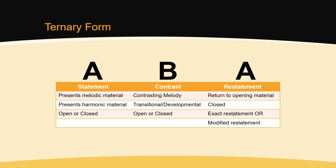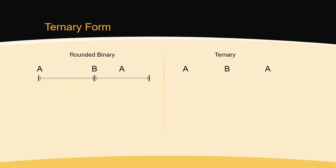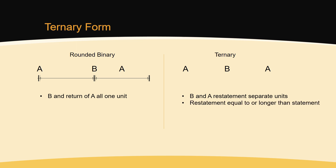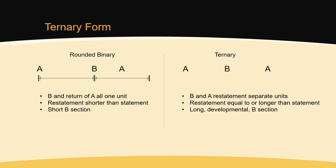This sounds very similar to rounded binary form, but there are some major differences between rounded binary and ternary form. In rounded binary, the repeat encapsulates both the B and the return of the A section, grouping them into one unit. In ternary form, the B section and the return of the A section are independent of one another. In ternary form, the amount of A material that is restated is equal to or longer than the original statement, rather than abbreviated as in rounded binary form. Finally, in ternary form, the B section is much longer than in rounded binary and can have not only transitional, but also developmental function.